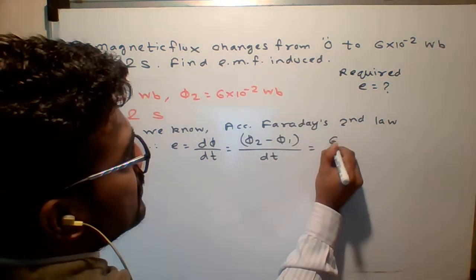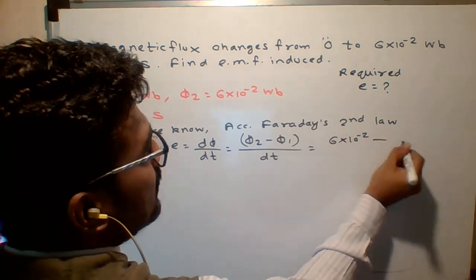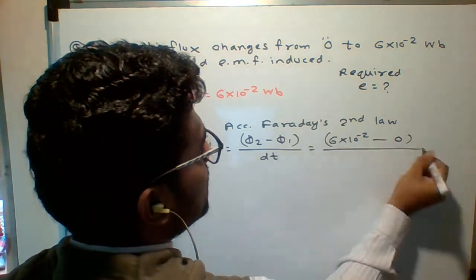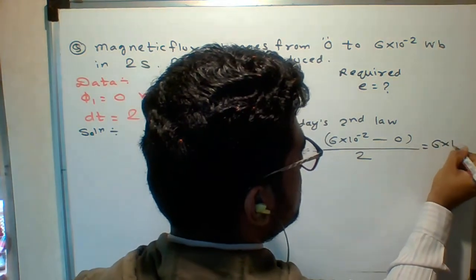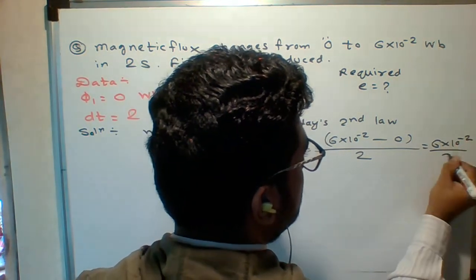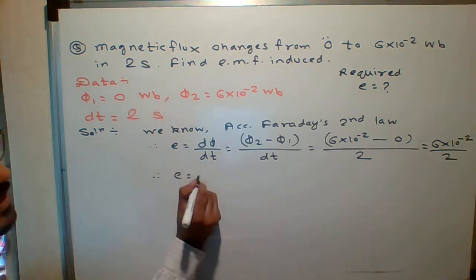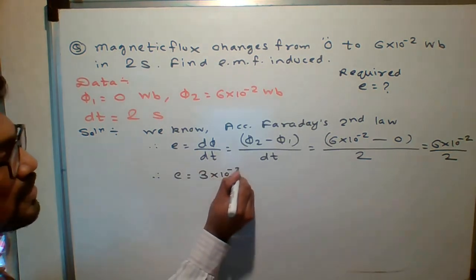The change in flux is how much? 6 into 10 raise to minus 2 minus 0 upon change in time is what? 2. So it is really easy question. 6 into 10 raise to minus 2 minus 0 is the same number upon 2. E is equal to 3 into 10 raise to minus 2.